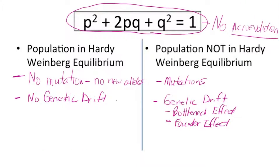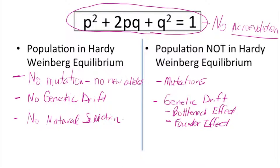So we've covered no mutation and no genetic drift. The next condition for Hardy-Weinberg equilibrium is no natural selection. There is a separate video on natural selection, and if you haven't seen it this would be a good time to go back and watch it. Obviously, natural selection occurring would set a population outside of Hardy-Weinberg equilibrium.